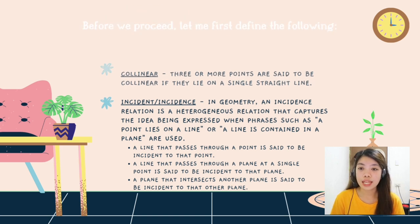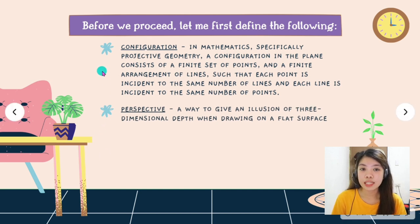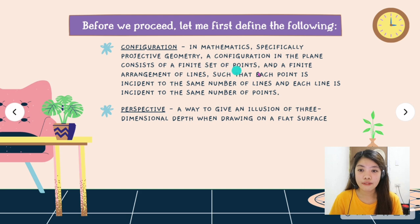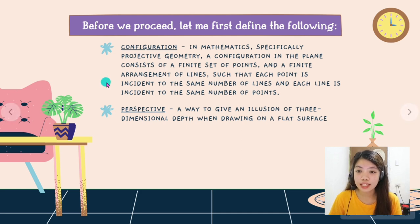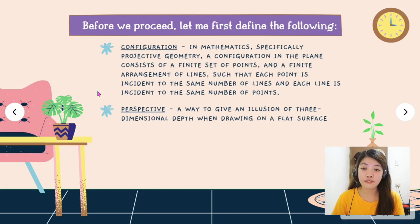So let us proceed to the next term which is configuration. In mathematics, specifically projective geometry, a configuration in the plane consists of a finite set of points and a finite arrangement of lines such that each point is incident to the same number of lines and each line is incident to the same number of points. The last term is perspective. Perspective is a way to give an illusion of three-dimensional depth when drawing on a flat surface. And that is the definition of terms.